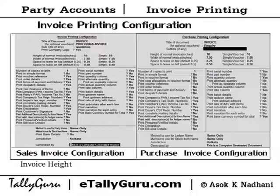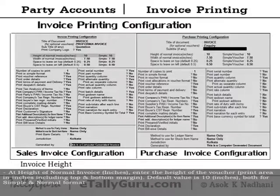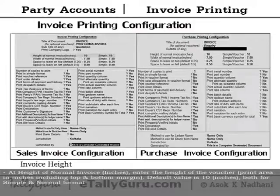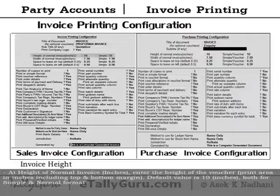Invoice height: at the 'Height of Normal Invoice (inches)' field, enter the height of the voucher print area in inches, including the top and bottom margins. The default value is 10 inches, both for simple and normal format.